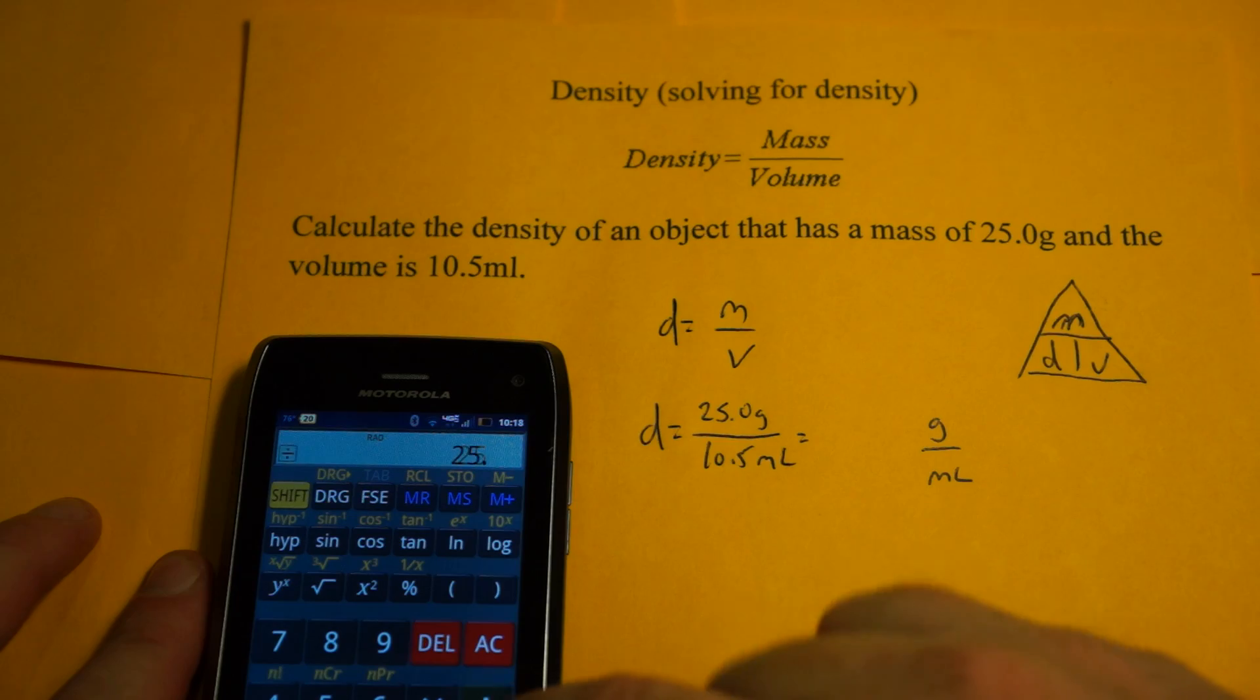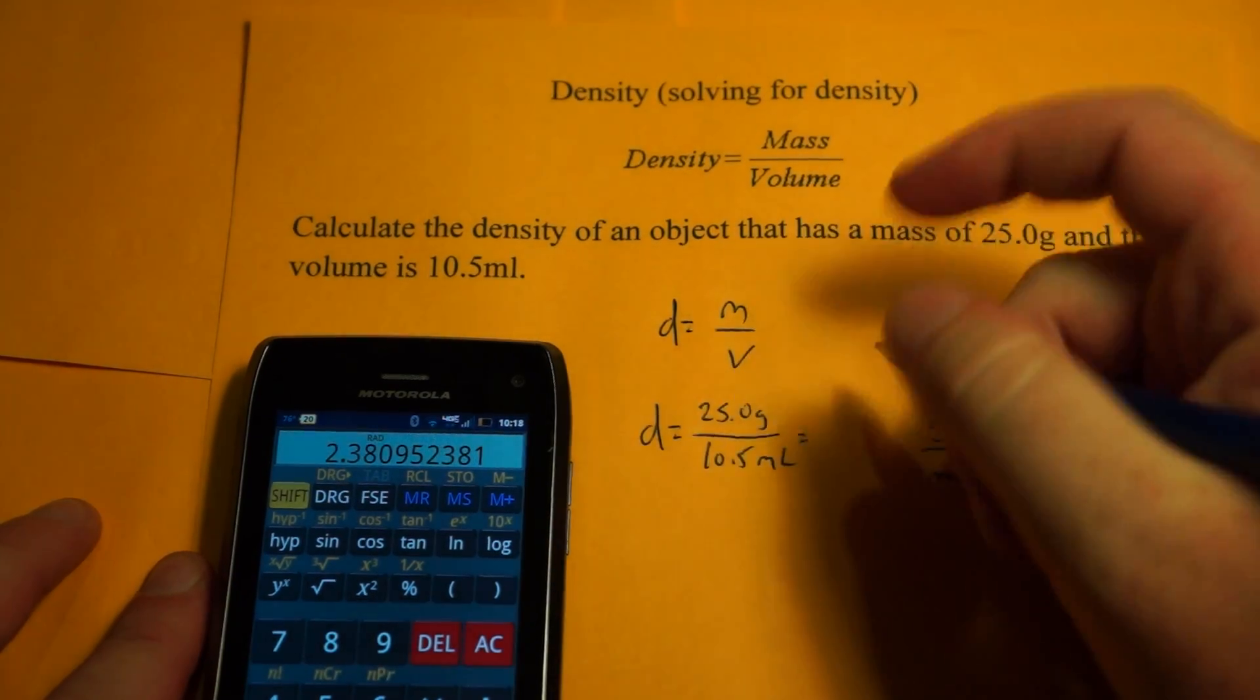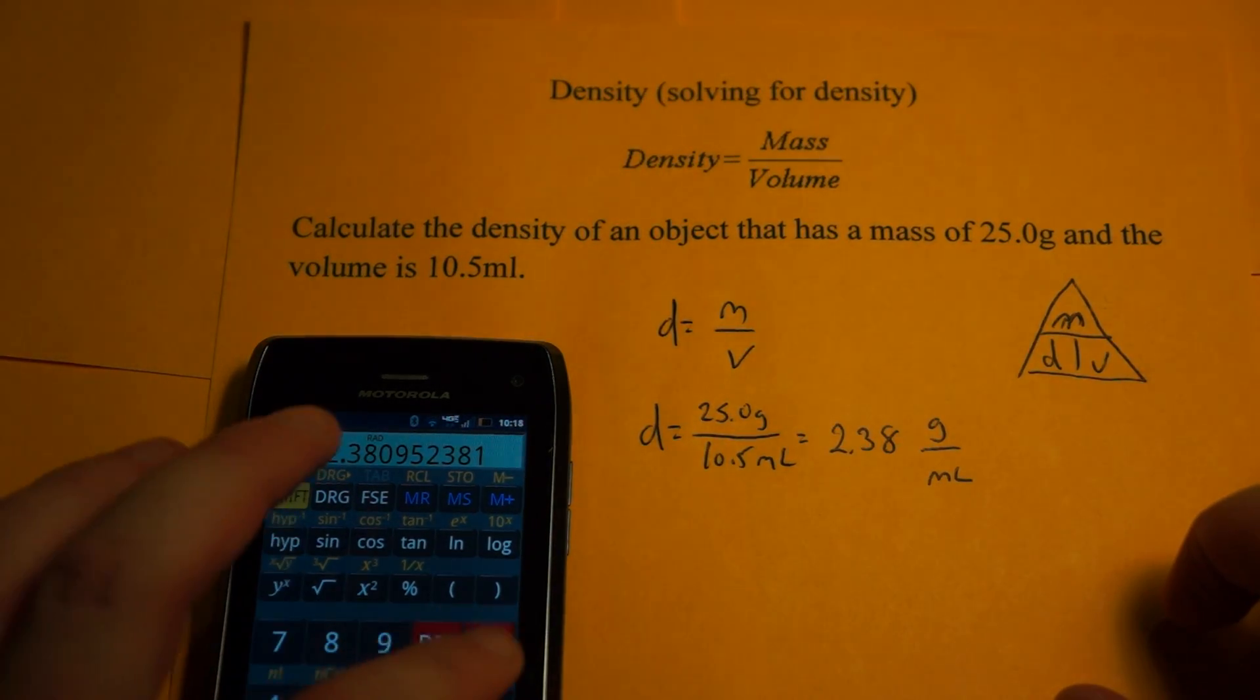And that's 25 divided by 10.5. And you get 2.38 grams per milliliter. And that's it.